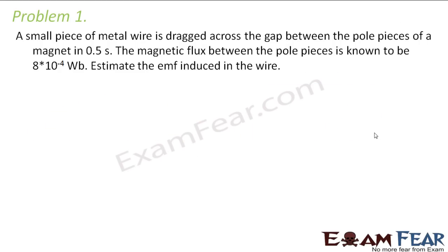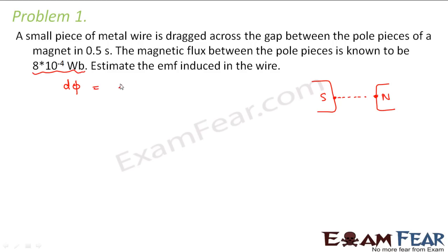It says that a small piece of metal wire is dragged across the gap between the pole pieces of a magnet in 0.5 seconds. Let us suppose these are the pole pieces of a magnet. You have a small piece of metal wire which is dragged across the gap from here to here in 0.5 seconds. The magnetic flux between the pole pieces is known to be 8 × 10⁻⁴ Weber. So when it moves from this point to this point the change in flux would be this much. The change in flux is given as 8 × 10⁻⁴ Weber, and the time taken is 0.5 seconds. So what would be the EMF induced?